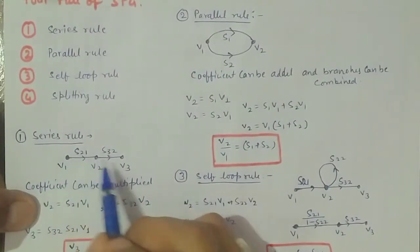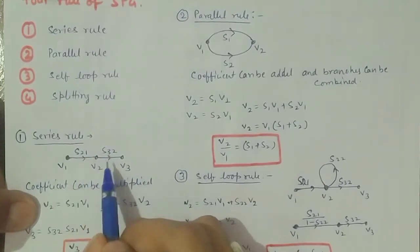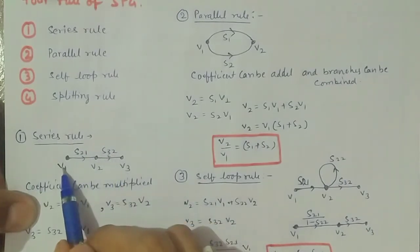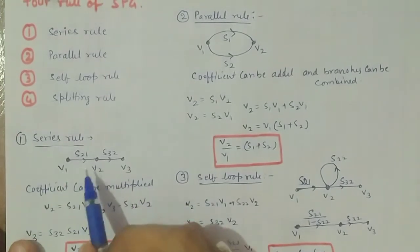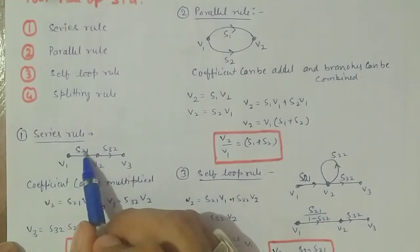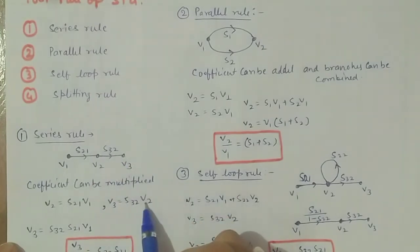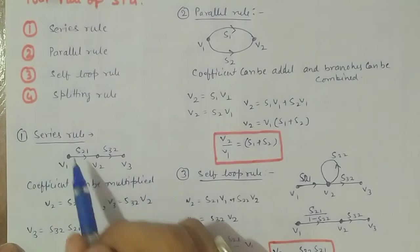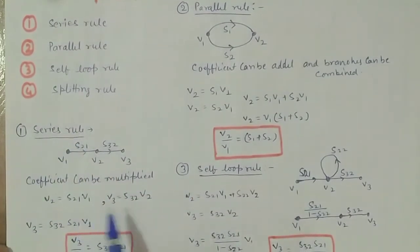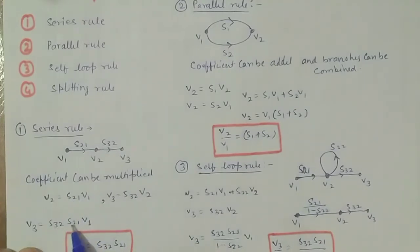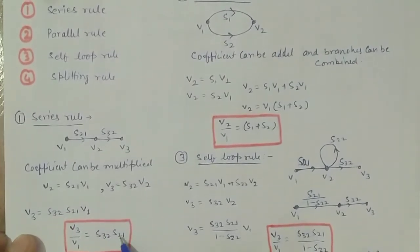The first rule is the series rule. Here we have three nodes and two branches in series. If we have two series connections, we can multiply their coefficients. V2 equals S21 times V1, and V3 equals S32 times V2. So if I want V3 in terms of V1, I substitute: V3 equals S32 times S21 times V1. Therefore the ratio V3 over V1 equals S32 times S21.